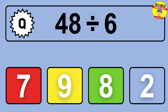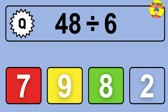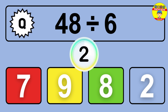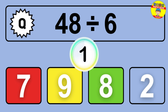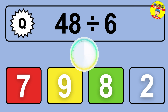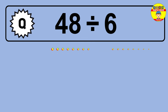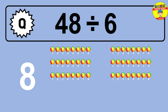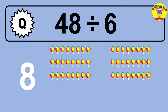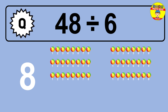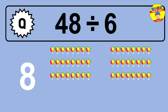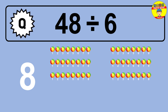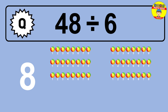48 divided by 6 is... time to think. Let's go to the solution. Divide the number 48 by 6. Each group contains 6 units, so dividing 48 by 6 results in 8 equal groups. Thus, the result is 48 divided by 6 equals 8.